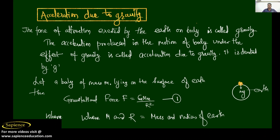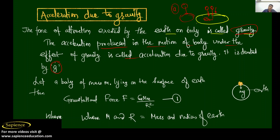Acceleration due to gravity — the force of attraction exerted by the earth on a body is called gravity. Earth will apply a force on an object. Let us consider this is your earth. Earth applies a force on an object, and due to this the object comes down — this is called gravity. The acceleration produced in the motion of a body under the effect of gravity is called acceleration due to gravity.